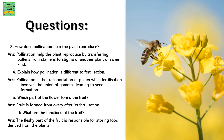How does pollination help the plant reproduce? Pollination helps the plant reproduce by transferring the pollen from the stamen to the stigma of another plant of the same kind. How is pollination different from fertilization? Pollination is the transportation of pollen, while fertilization involves the union of gametes, leading to seed formation.